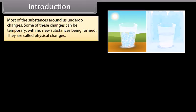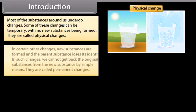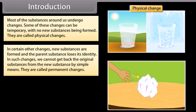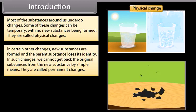Introduction. Most of the substances around us undergo changes. Some of these changes can be temporary, with no new substances being formed — they are called physical changes. In certain other changes, new substances are formed and the parent substance loses its identity. In such changes, we cannot get back the original substance from the new substance by simple means.